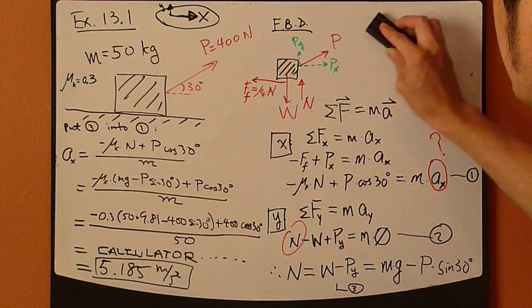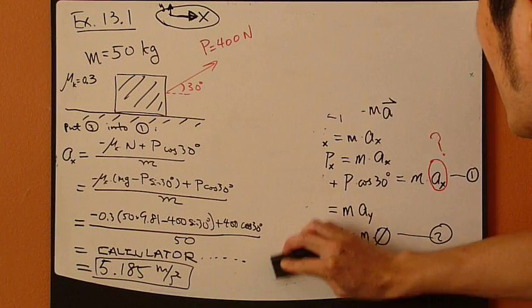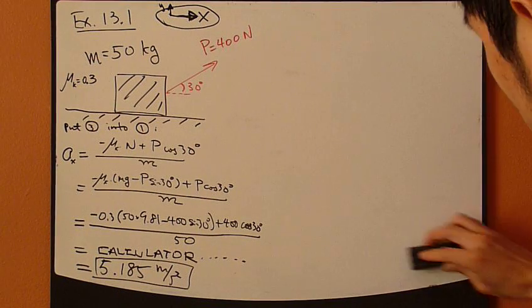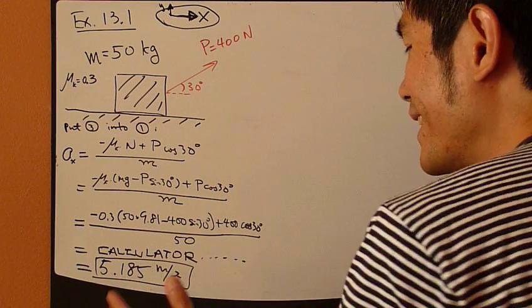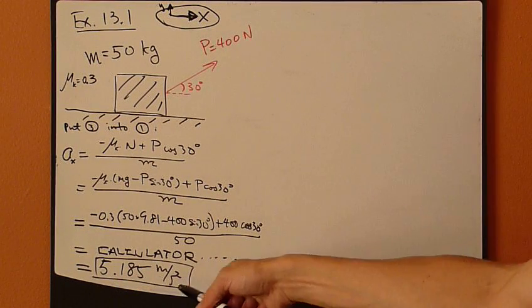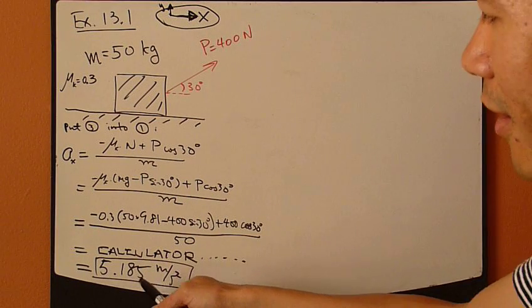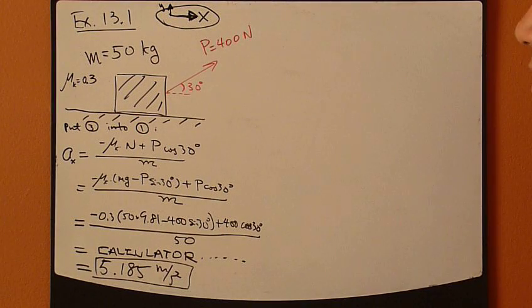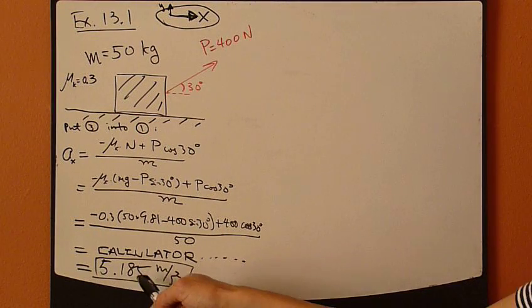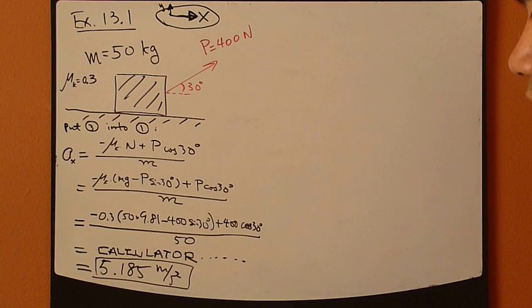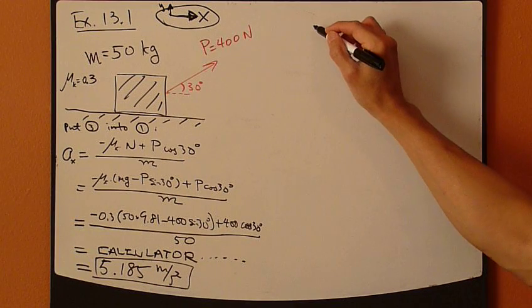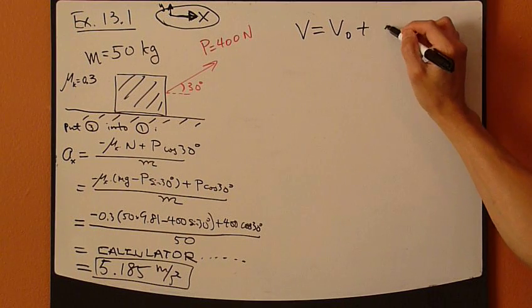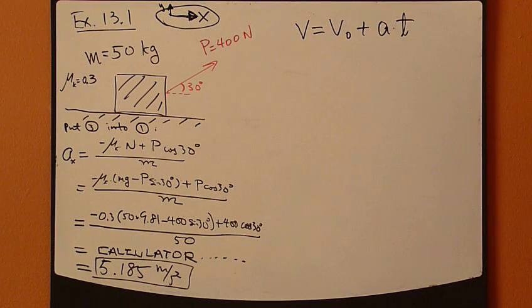Going to the last step, which is kinematics. So, acceleration is a constant. You've proven that using kinetics, using second law. So, now, this results in constant x acceleration of 5.185 meter per second squared. So, constant acceleration, you can use this equation now. This equation now is valid.